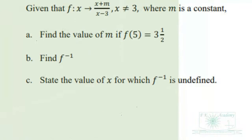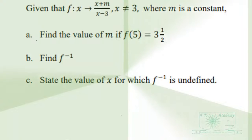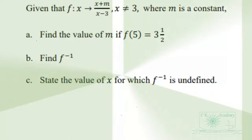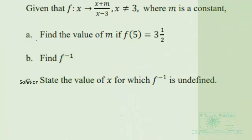This next question is on relations and functions. Given that f maps x to (2x + m) over (x minus 3), where x ≠ 3 and m is a constant, find the value of m if f(5) equals 3 and a half. Also find f inverse and state the value of x for which f inverse is undefined.